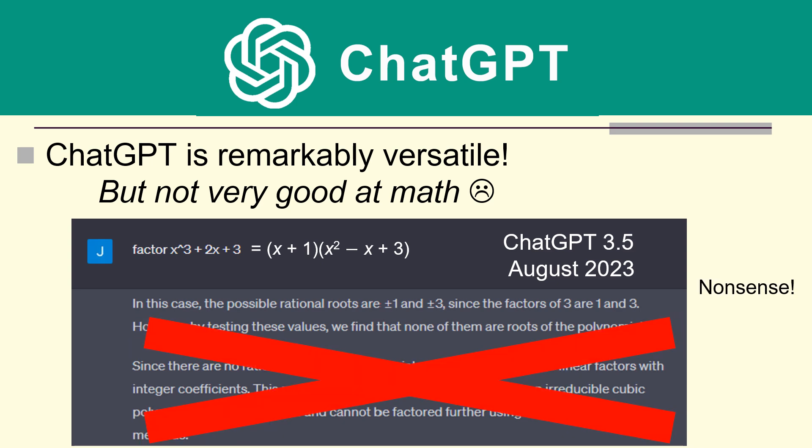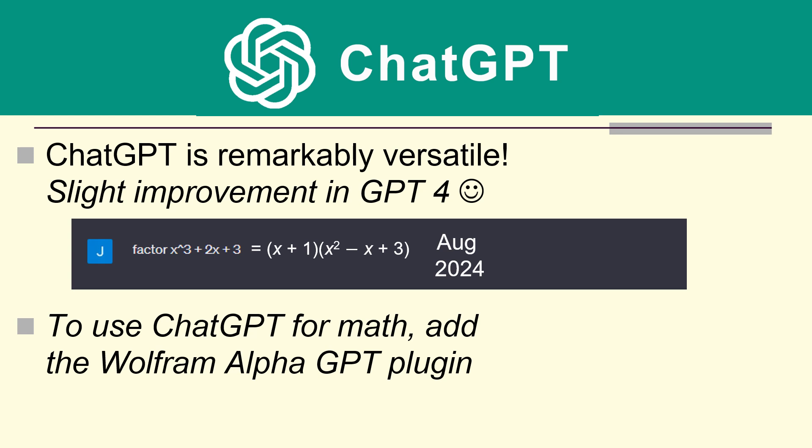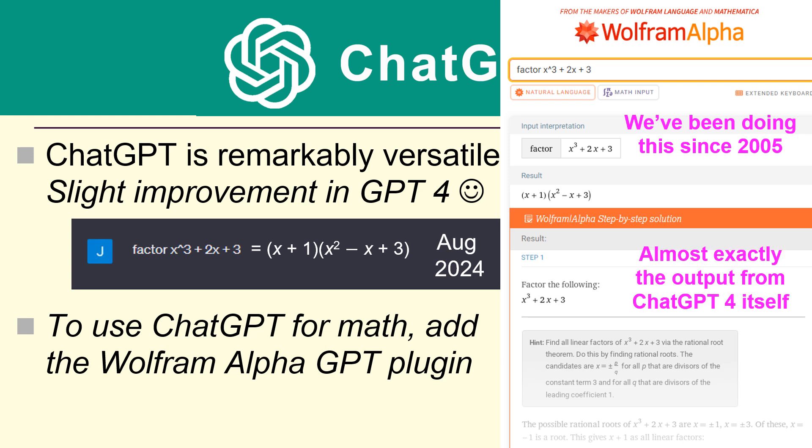But nonsense with a nice British accent. Now ChatGPT 4 was a slight improvement, but most people say well, if you're going to use ChatGPT for math, you probably want to add the Wolfram Alpha GPT plugin. We've been doing Wolfram Alpha since 2005, and the output from ChatGPT 4 is almost exactly the output from Wolfram Alpha if you use the plugin. So ChatGPT without the plugin is actually still pretty bad at math.